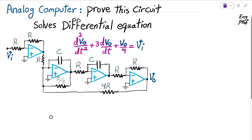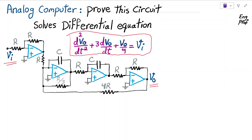An analog computer, shown here, realized using four ideal op-amps shown in blue. VI at input is applied and Vout at the output is showing up. We want to show that this analog computer effectively realizes and solves a second order differential equation, shown here.